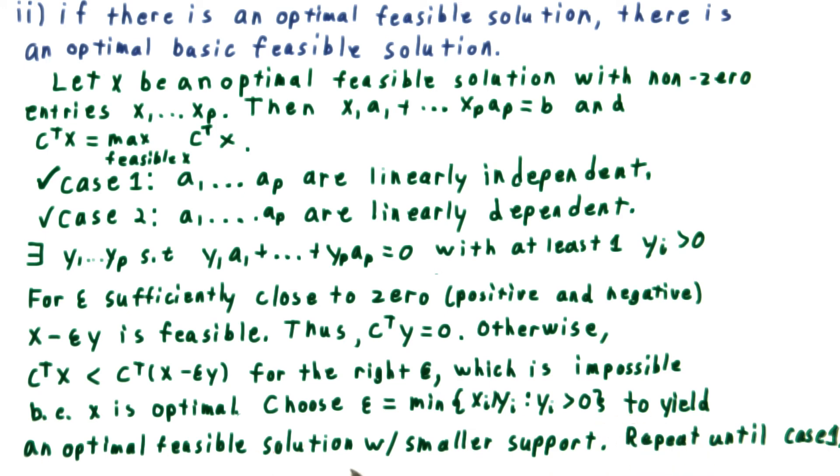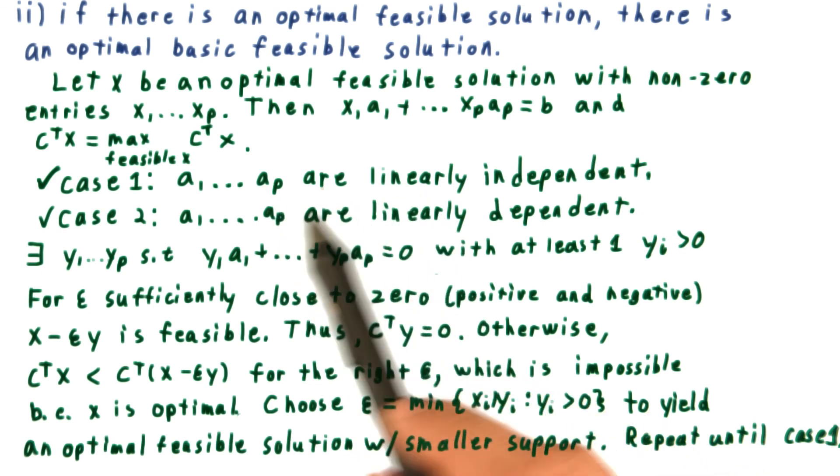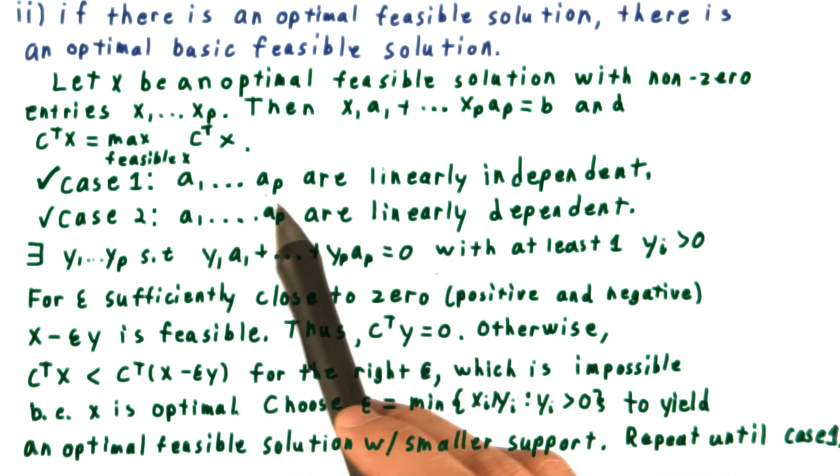It'll still give us an optimal feasible solution, only this time it'll have smaller support, because we're able to choose it to set one of the coefficients of this vector here to 0 that wasn't 0 before. And we can repeat playing this game over and over until we reach the case where a1 through ap are linearly independent.